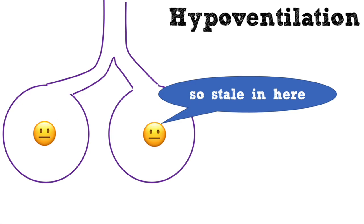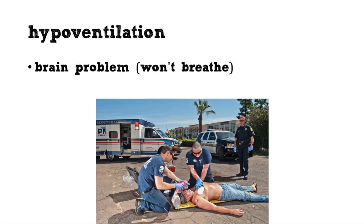In hypoventilation, the alveoli and the bronchi are working perfectly, and the problem is simply there's not enough ventilation getting to the lung — the alveoli are burning through oxygen faster than they're getting it. The most commonly encountered cause is a central brain drive problem, where the brain is simply not stimulating the body to breathe, most familiar in the context of opioid intoxication.